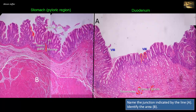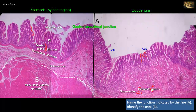The muscularis mucosa layer separates the mucosa from the submucosa. In the submucosa on the left side there are no glands, unlike the submucosa of the duodenum on the right side where Brunner's glands are visible. So on the left we have the pyloric region of the stomach, and on the right we have intestinal villi and Brunner's glands in the submucosa representing the duodenum. The junction is therefore a gastroduodenal junction. Region B is a thickened area of the muscularis externa where the inner circular fibers are thickened to form the pyloric sphincter.